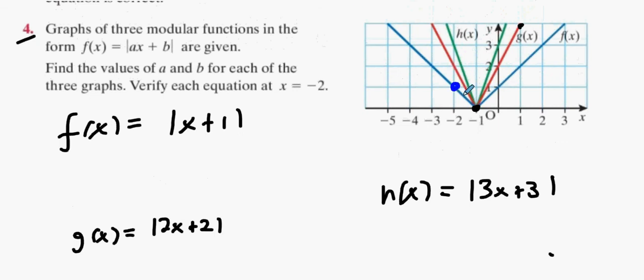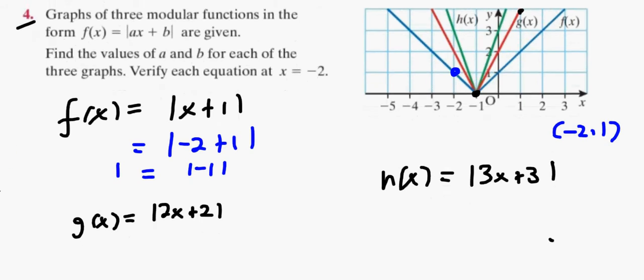Well, for the f of x equation, when you put in minus two, you should get an answer of one. Let's figure that out. So f of minus two equals... Sorry, minus two one belongs to f. So f is up here. So it's going to be, replace x with minus two. So it's going to be minus two plus one, which is the modulus of minus one. And does the modulus of minus one equal one? Prove it, isn't it?